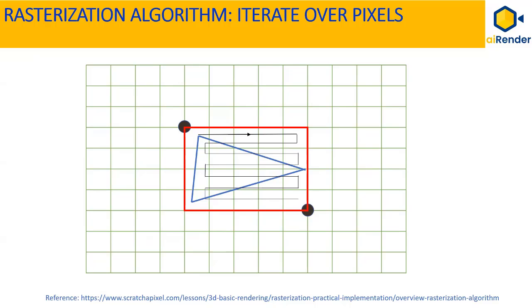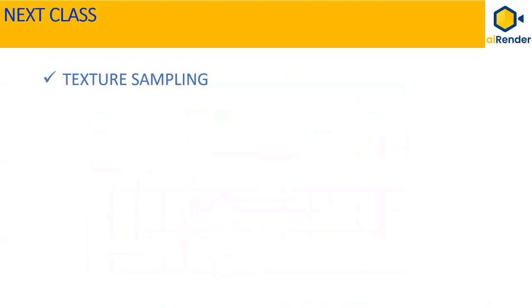Once you compute the bounding box of the triangle, the next step is to iterate only over the pixels within the bounding box to rasterize the triangle, rather than rasterizing over the entire set of pixels on the computer screen. Rasterization checks whether each pixel in the bounding box is inside or outside the triangle using the rasterization rules we discussed in the prior slide. In the next class, we'll take you to the world of text assembly.